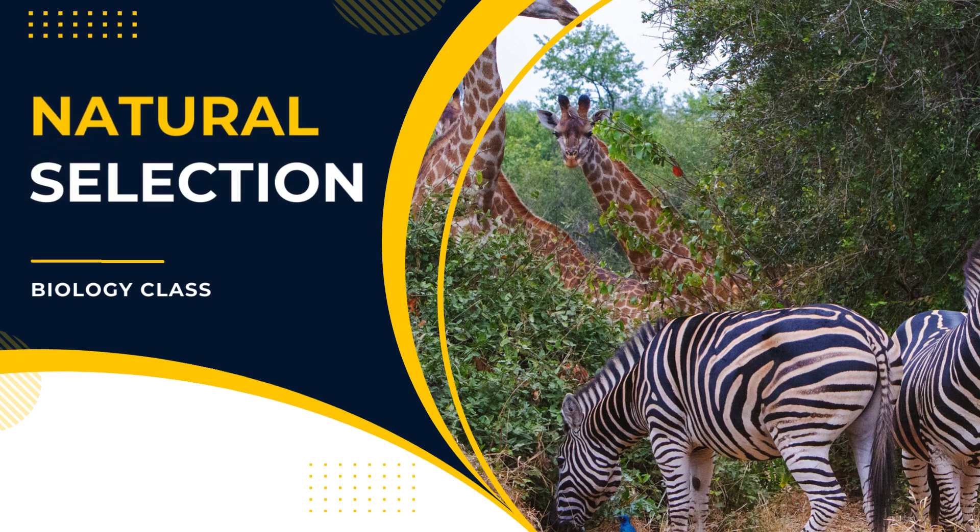Natural selection, proposed by Charles Darwin, is the process where organisms with advantageous traits survive and reproduce, passing on these traits to their offspring. Over time, this leads to the evolution of species. Natural selection is a key mechanism driving the diversity of life on Earth, as it allows for adaptation to changing environments.